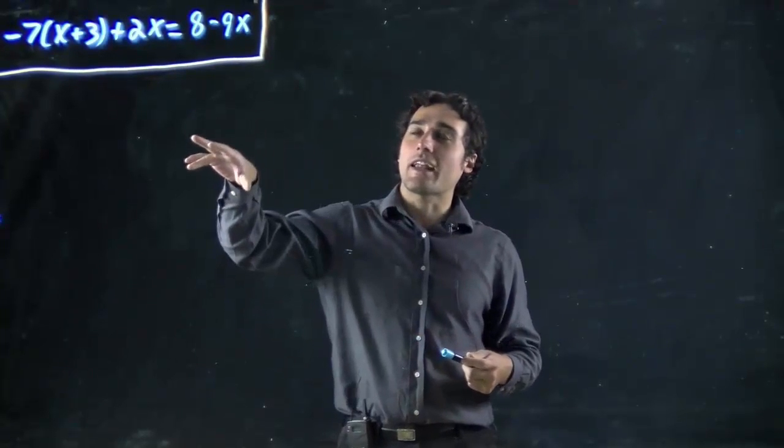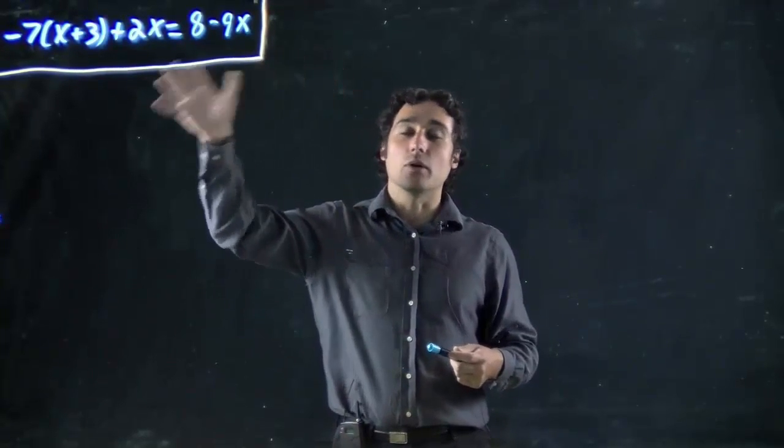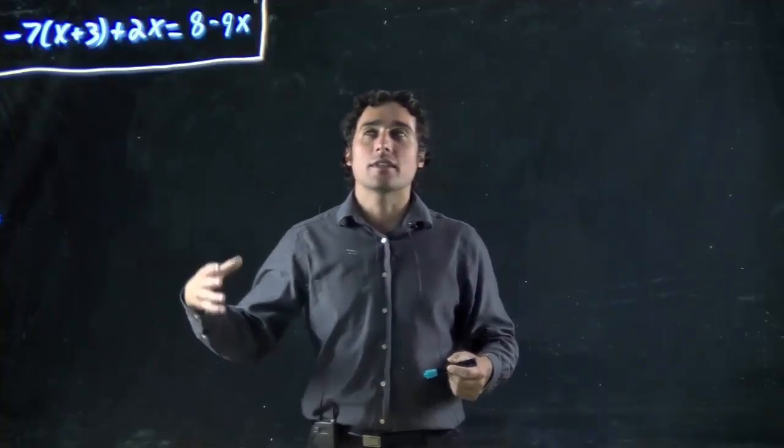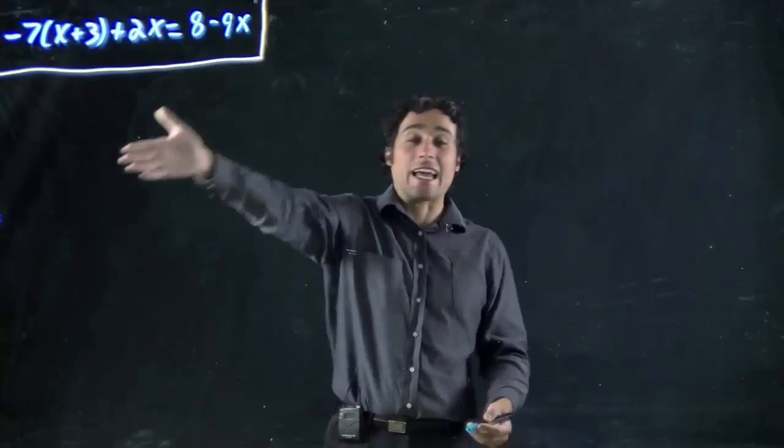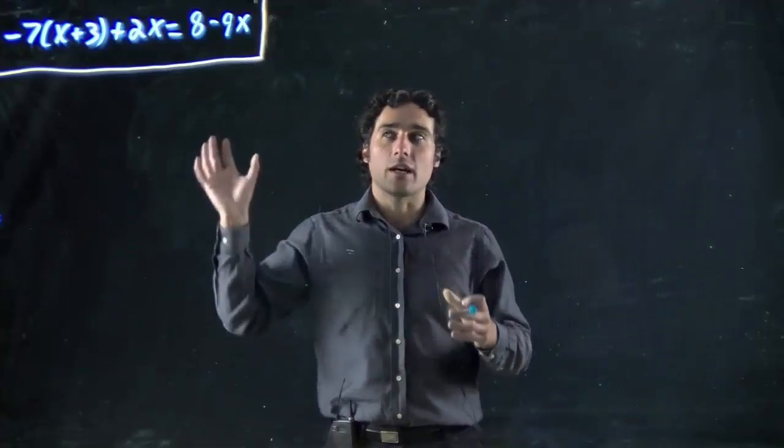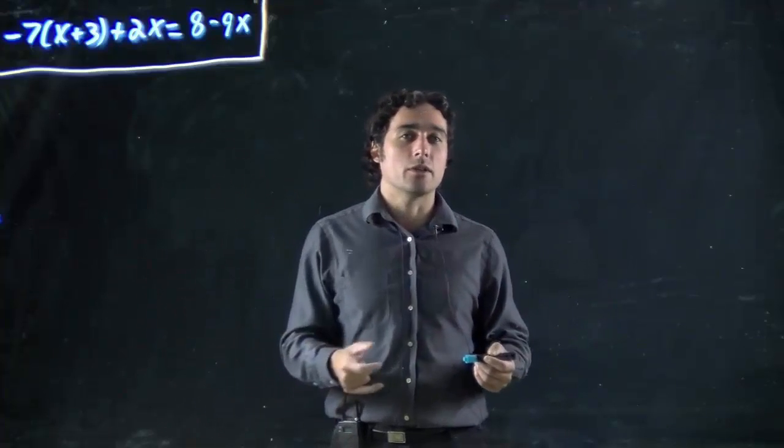Hi again. Now we're looking at having variables on both sides of the equation or even multiple variables on one side. The whole thing is, we still want to solve for, in this case, x, but we've got to get all the x's together, all the numbers together, and then solve for x, just like we've been doing.